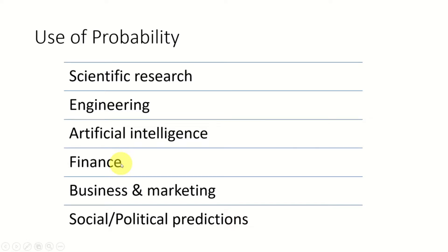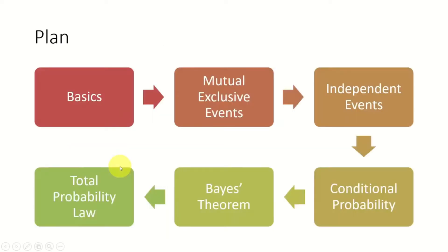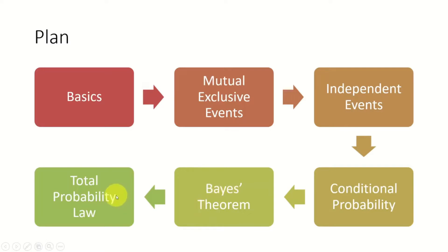For example, what is the probability of a particular candidate winning the next election? So let's look at our plan for the probability part. In this session we will be looking at the basics. Then we will move on to mutually exclusive events and independent events in our next session. Then we will move on to advanced concepts like conditional probability, Bayes' theorem, total probability law, and so on.